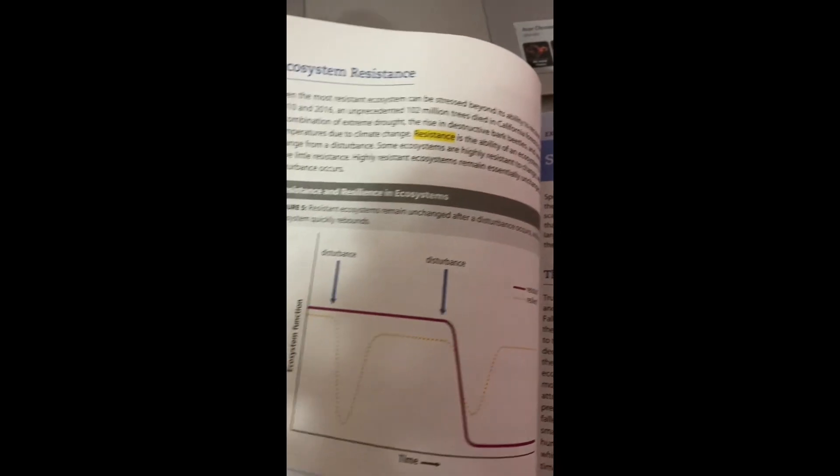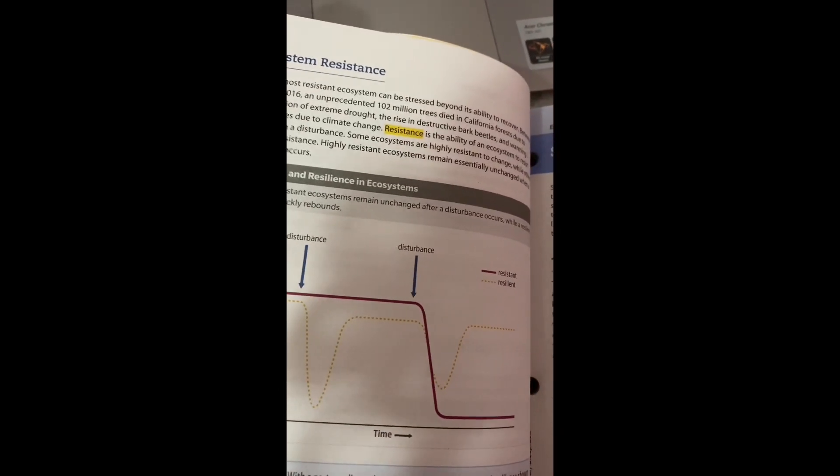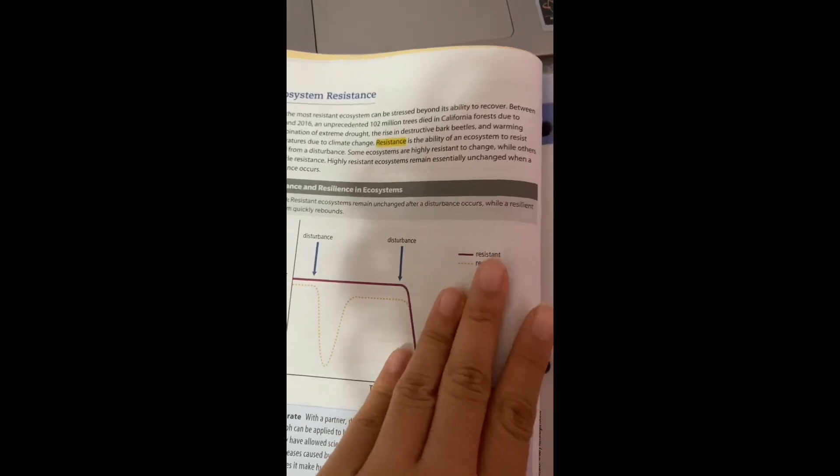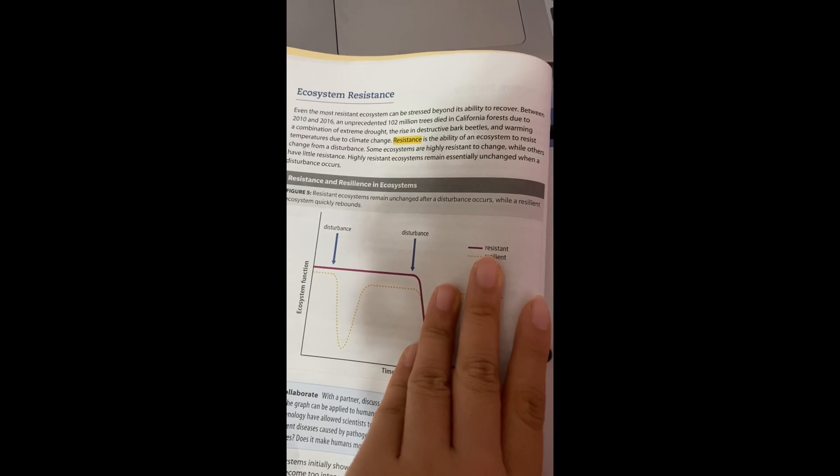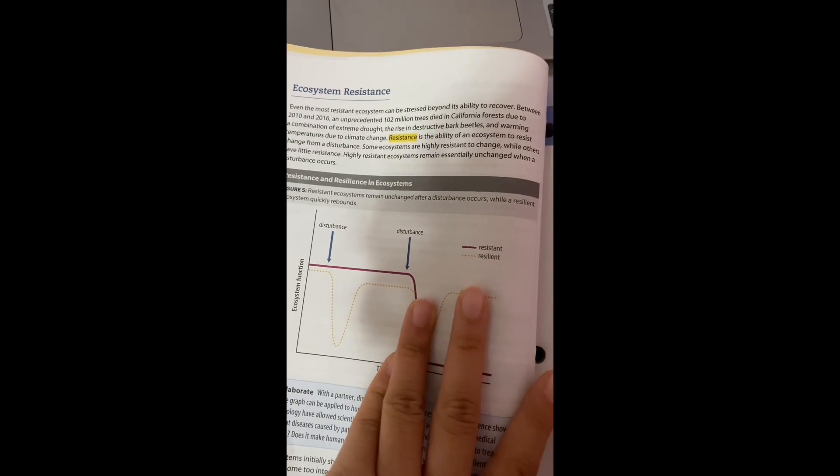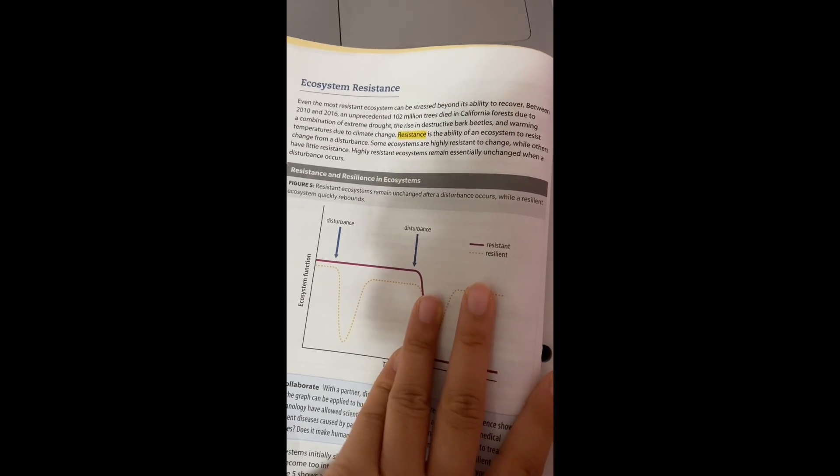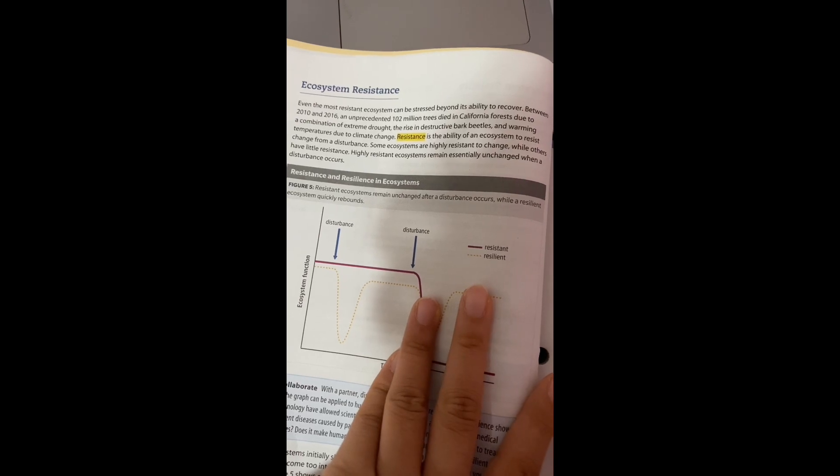Ecosystem Resistance is an ecosystem's ability to withstand disturbance. Between 2010 and 2016, 102 million trees died in California due to extreme drought, bark beetles, and warming temperatures due to climate change. Some ecosystems can resist change.